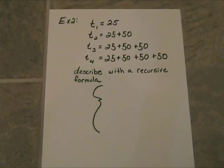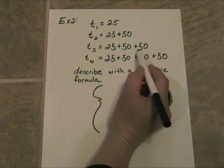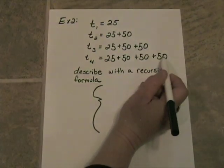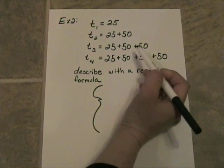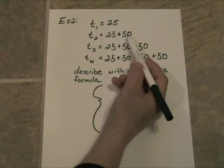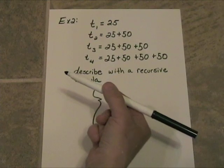Here is another sequence. It is being written out a little bit differently. We are actually showing you the numbers that are being added together to generate the terms. t sub 1 starts at 25. t sub 2 we add 50 to the 25. t sub 3 we are going ahead and adding another 50. What is happening is we have a starting value of 25 and then each term we simply add 50 to the answer that came before.